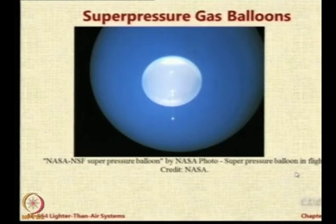A super pressure balloon is basically a balloon which is generally made of very thin fabric, very thin envelope material, and we inflate it at sea level or low altitude with less amount of LTA gas just enough to lift it up.